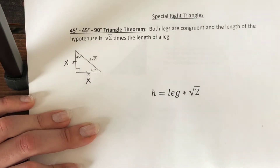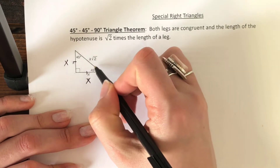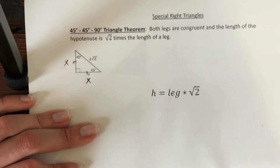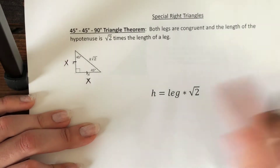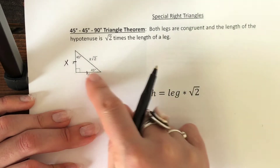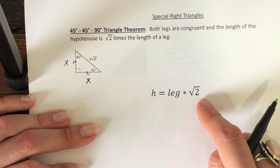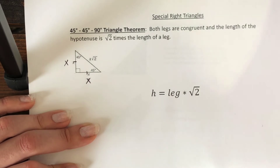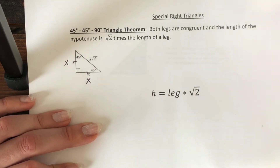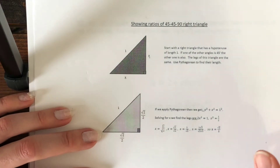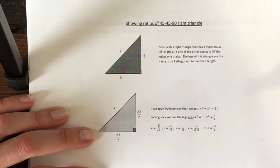The two legs, since they're isosceles, are going to be the same size — we say they're X big — and then the hypotenuse is going to be X times the square root of 2. So you can think of it as: take the leg length and multiply it by the square root of 2, and that's going to be a lot faster than using the Pythagorean theorem.